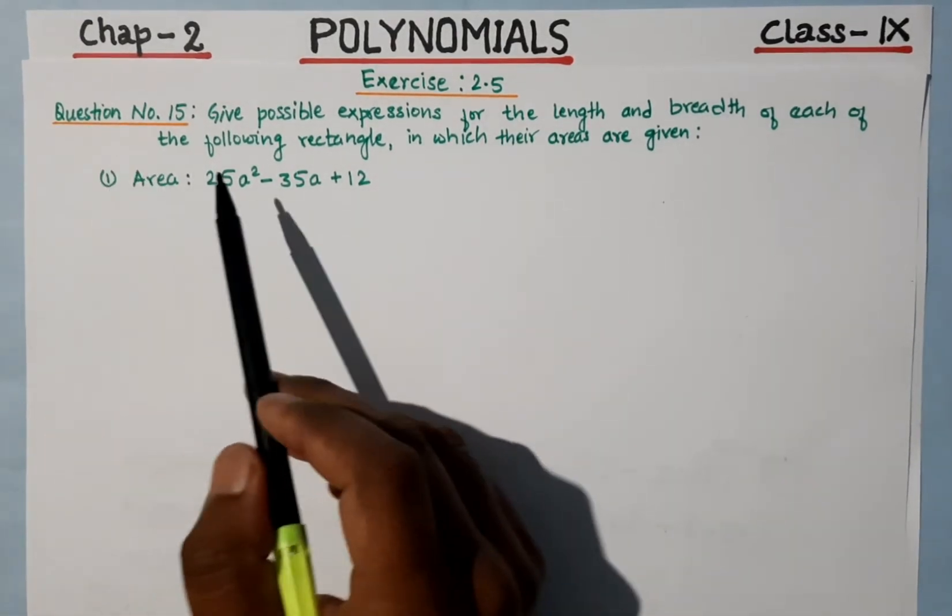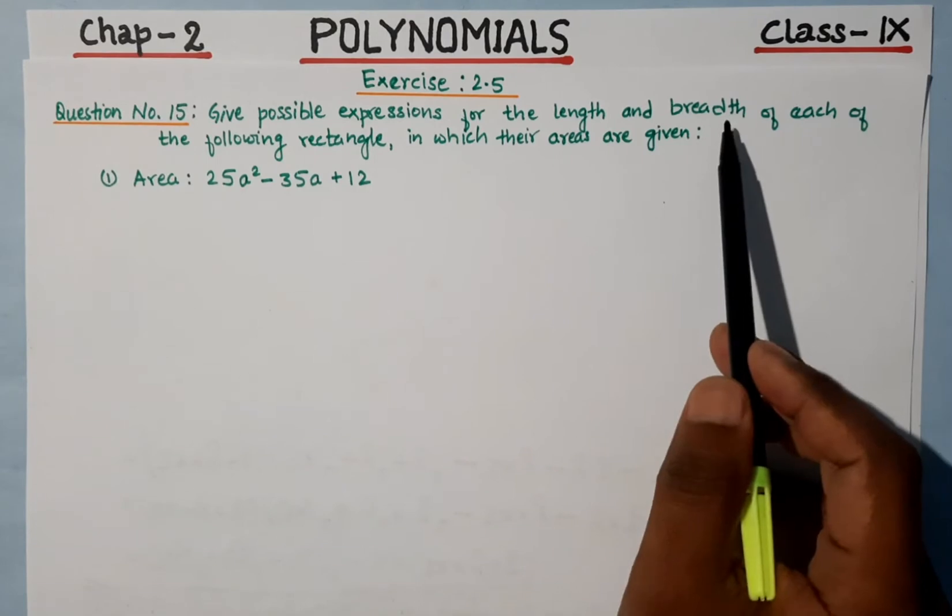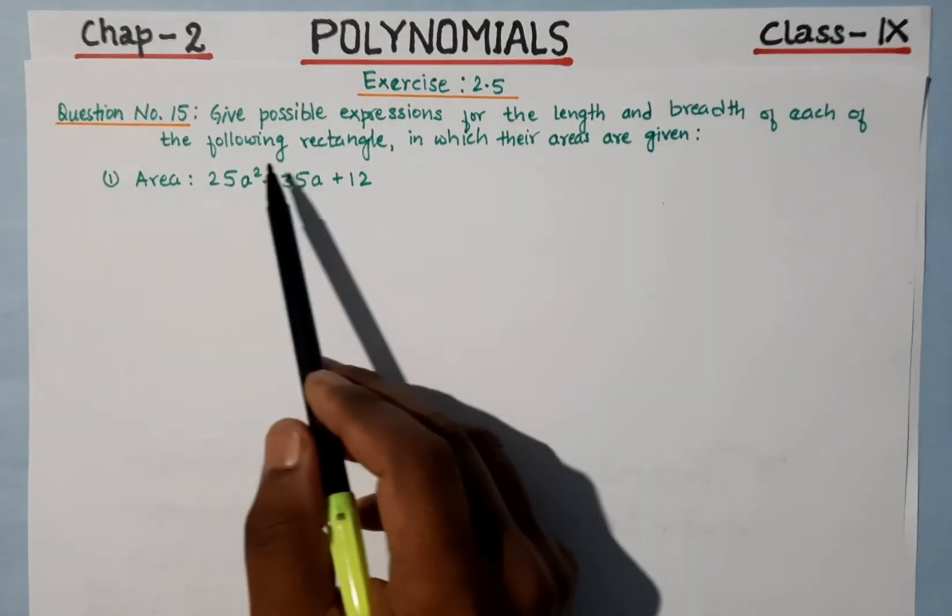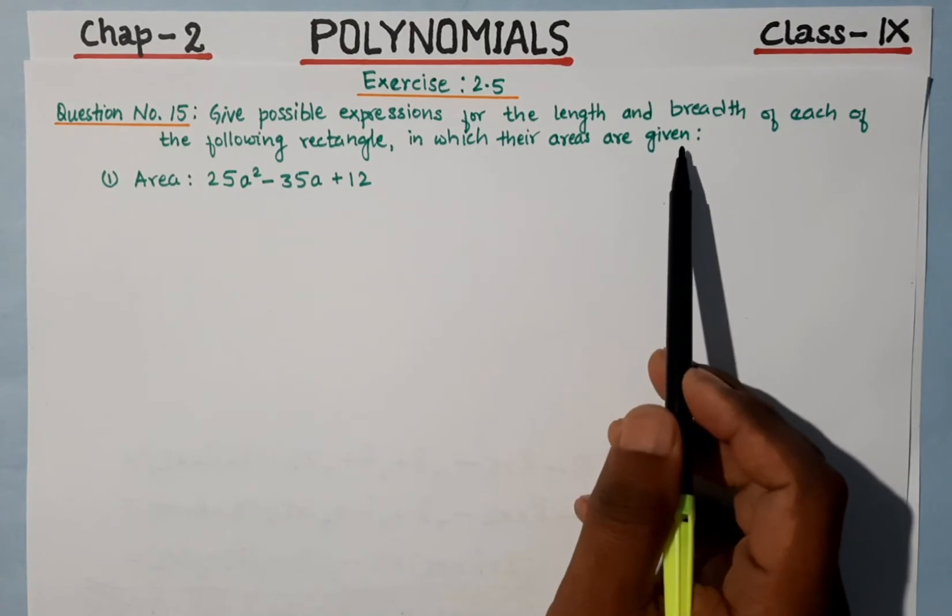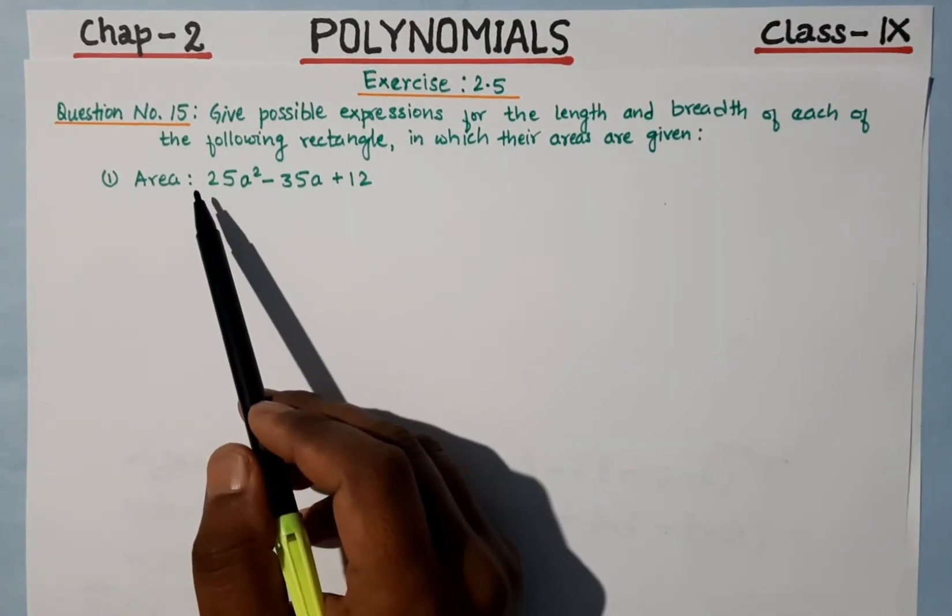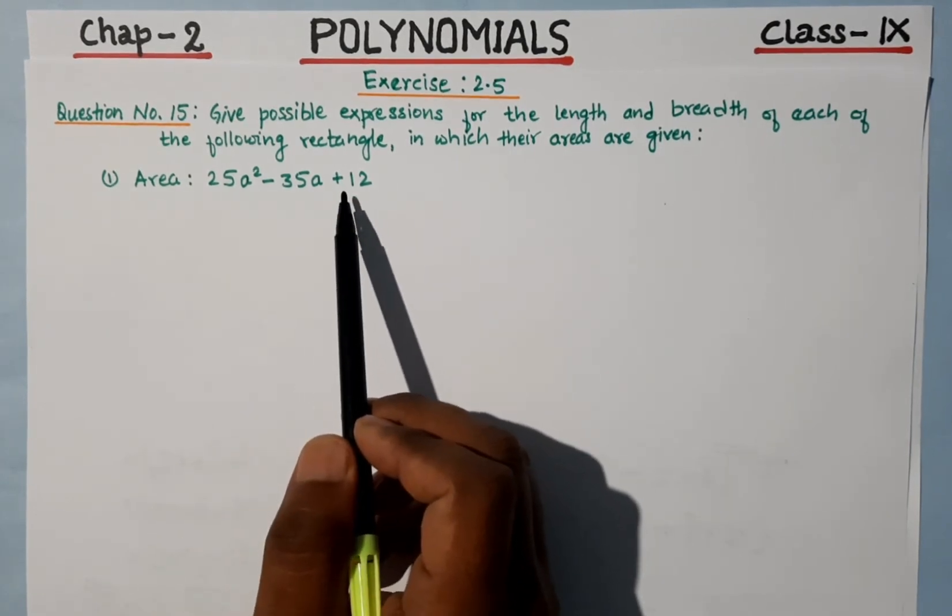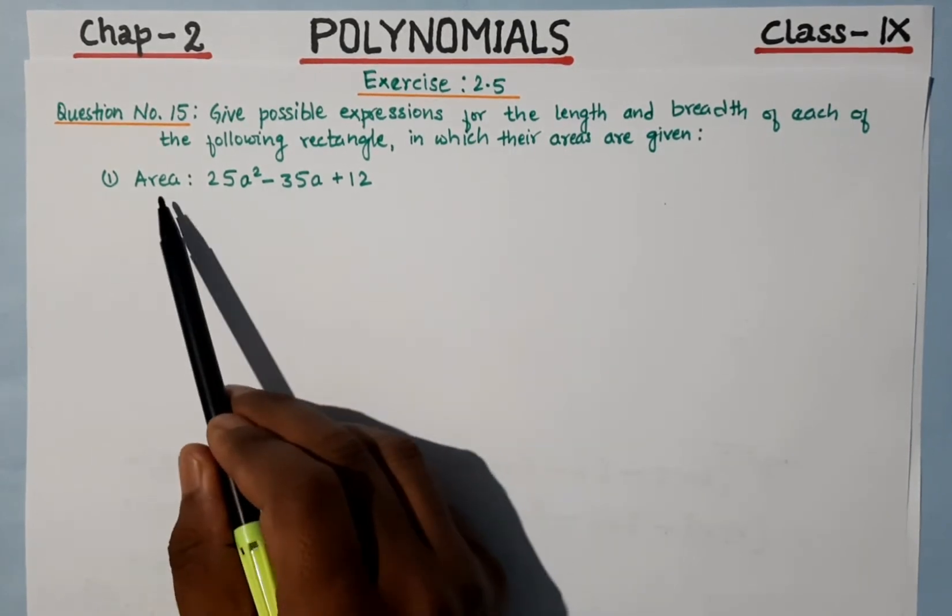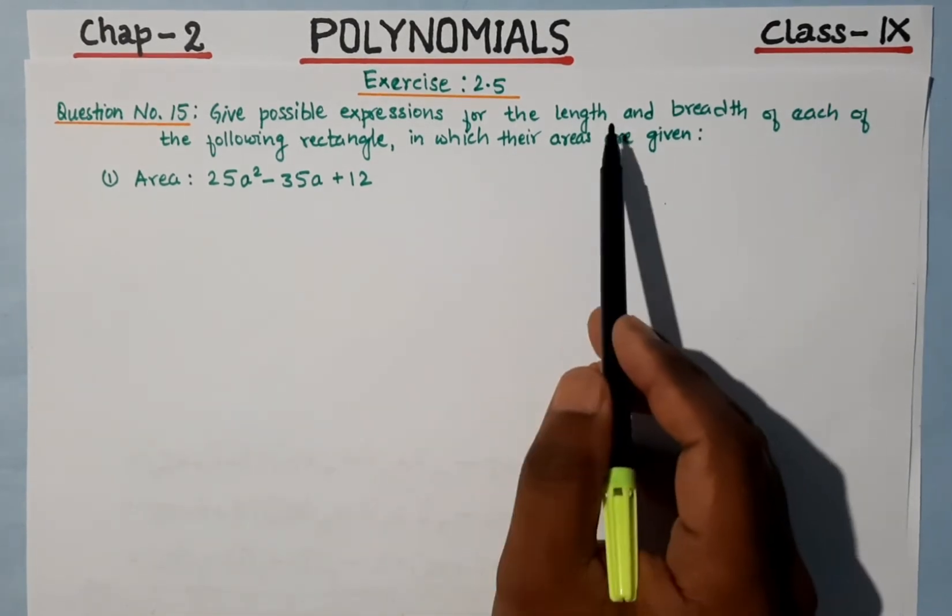Question number 15: Give the possible expressions for the length and breadth of each of the following rectangle in which their areas are given below. There are two questions, and in each question we have two algebraic expressions. These expressions represent the area of a rectangle. What we need to do is find out the length and breadth.